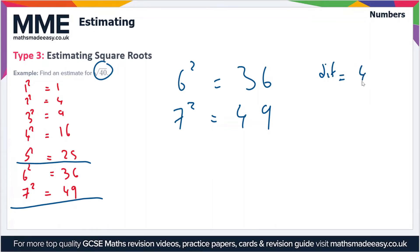And 7 squared which is 49, the difference between 49 and 40 is 9. So the smaller difference is between 6 squared and root 40, or between 36 and 40.